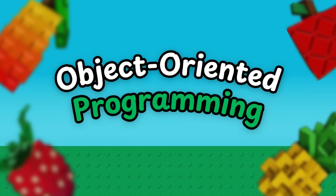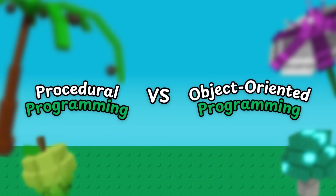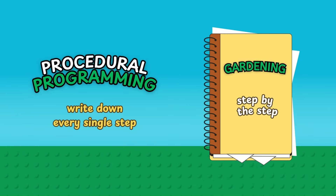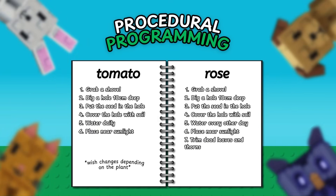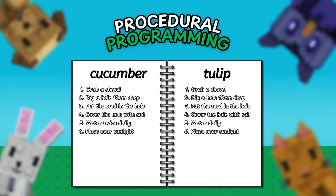But before we get too deep, let's compare this with the other style of programming so you can really see the difference. In programming, there are two ways to go about this: procedural programming and object-oriented programming. In procedural programming, you're a gardener who writes down every single step in one giant notebook. For planting a tomato: step 1, grab a shovel; step 2, dig a hole 10 centimeters deep; step 3, put the seed in the hole; step 4, cover the hole with soil; step 5, water daily; step 6, place near sunlight. Then when you plant a different kind of seed, you basically copy those steps again and again with tiny changes. Your notebook gets long, messy, and repetitive.